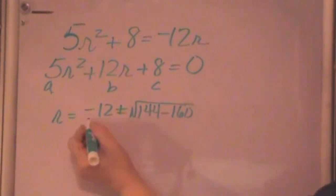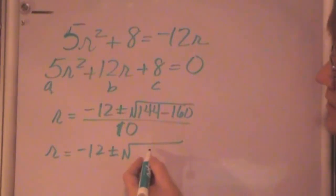Which is 160, all over 2 times A, and A is 5, so that's 10 down here. So now R is equal to minus 12 plus or minus the square root of 144 minus 160 gives us a negative number, but we know how to deal with negative square roots now. So negative 16 over 10.